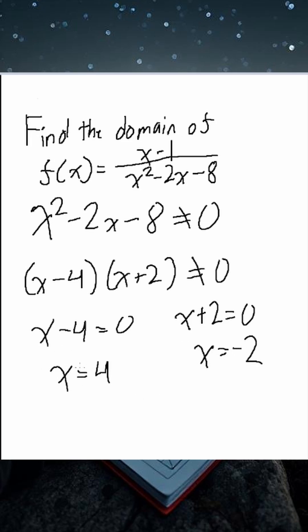we can't have these values. So x does not equal 4, and x does not equal negative 2. So our domain is all real numbers except for 4 and negative 2. We'll have from negative infinity to negative 2, union negative 2 to 4, union 4 to infinity.